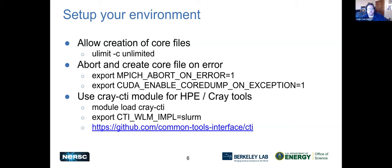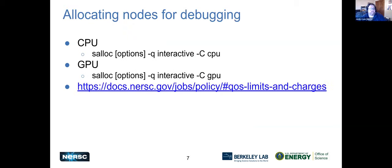There are some important environment variables for both MPI and CUDA. If you're using HPE tools, they have something called the Common Tools Interface, which has an environment variable you can set to use SLURM as the job launcher. When allocating nodes, use the interactive or debug queue, and make sure you're setting your constraint for CPU and GPU.